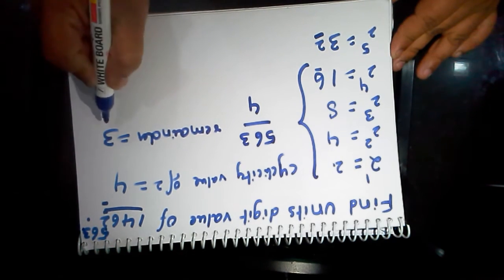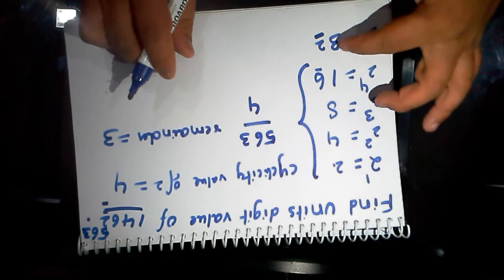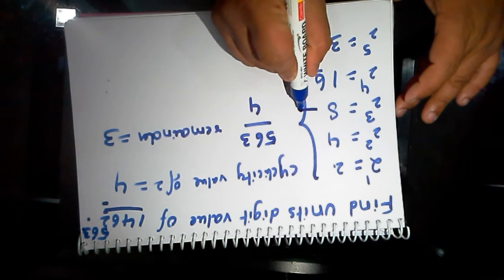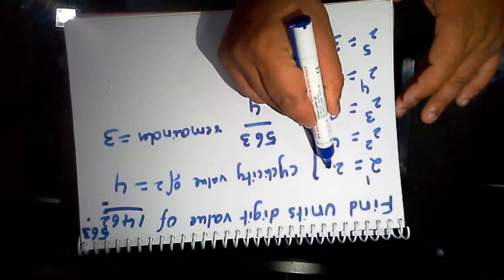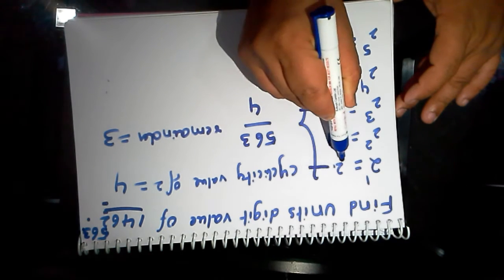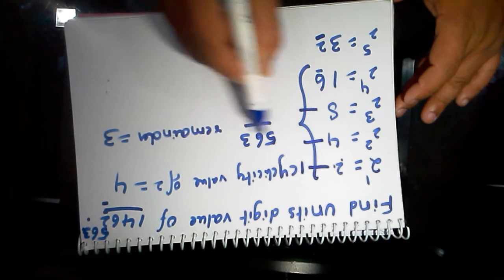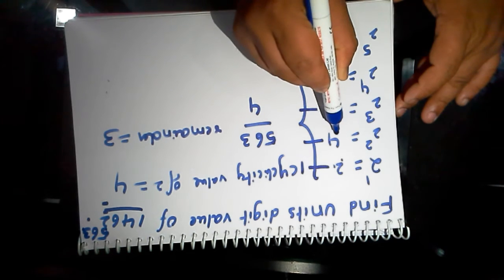The remainder value 3 means after some cycles it stopped here. If you get remainder value 1, the units digit value is 2. If you get remainder 2, the units digit value is 4.